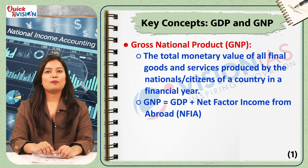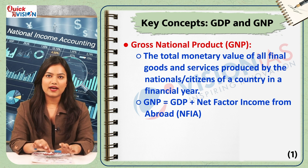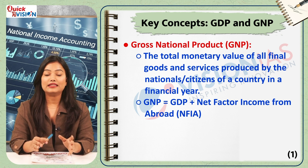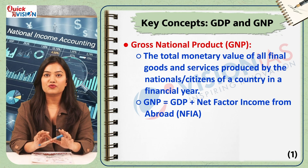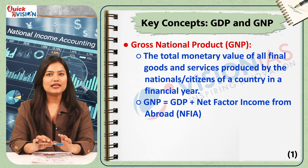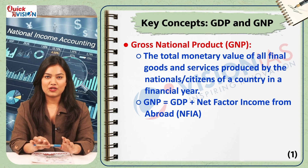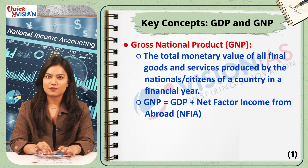Now let's talk about GNP. Gross national product or GNP is the value of all final goods and services produced by the nationals of a country in a financial year, regardless of where they are produced in the world. To calculate it, we add the net factor income from abroad to the GDP. In simple terms, GDP is a geographical concept, while GNP is a citizen-based concept.